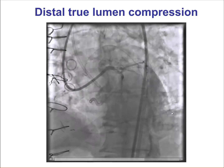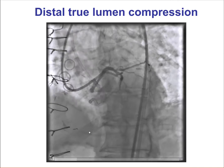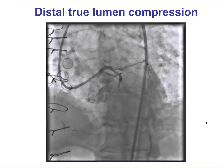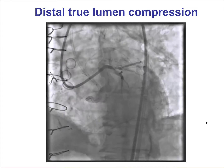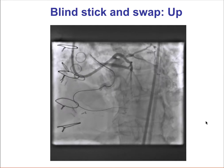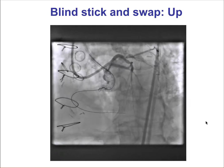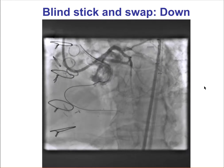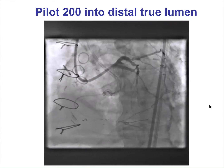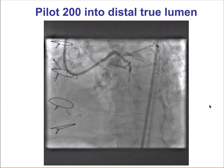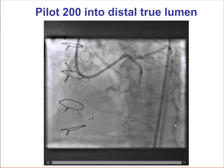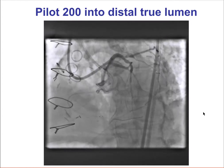In this case, we encountered a similar challenge as in the previous case: compression of the distal true lumen by subintimal hematoma formation. Similar to before, we performed aspiration using the STRAW technique; however, that failed to re-expand the distal true lumen. We then performed the blind stick and swap technique, sticking in both the upward and downward directions using the Stingray guidewire, then swapping to a Pilot 200 guidewire. By doing that, we achieved successful reentry into the distal true lumen.